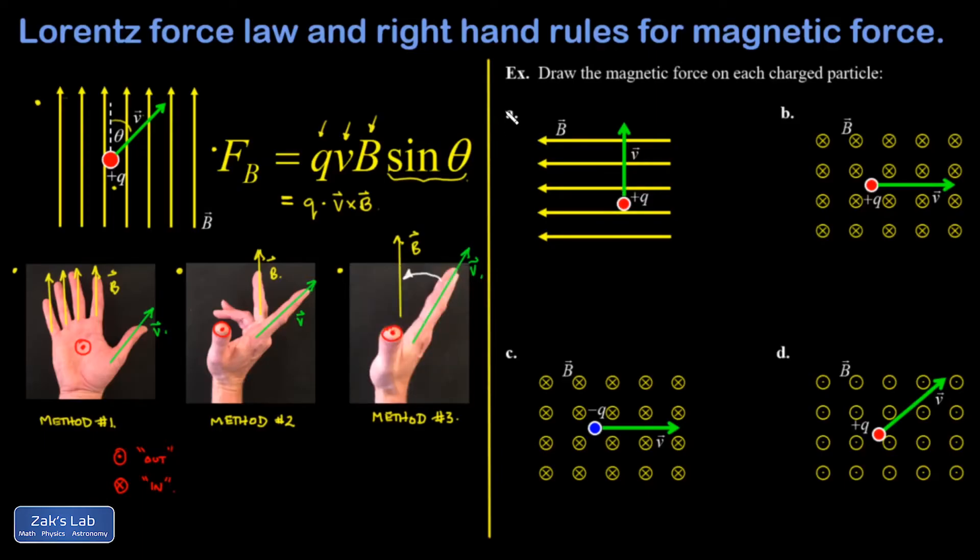Let's get into our examples. In example A, I have a magnetic field pointing to the left. I have a velocity of a charged particle pointing up. Now you can take your choice of these three methods.